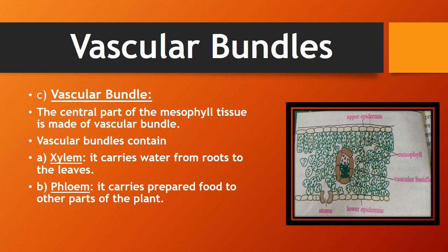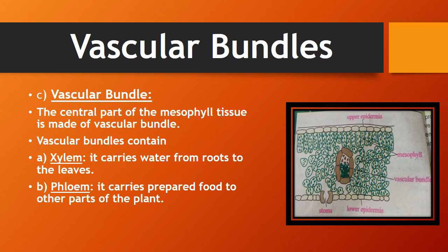Now we will move to the last part of the leaf: the vascular bundle. The central part of the mesophyll tissue is made up of vascular bundles. Vascular bundles contain xylem, which carries water from the roots to the leaves, and phloem, which carries prepared food to other parts of the plant. Xylem is responsible for carrying water from roots to leaves, and phloem carries the food prepared through photosynthesis to other parts of the plant. This is how the internal parts of the leaf work.